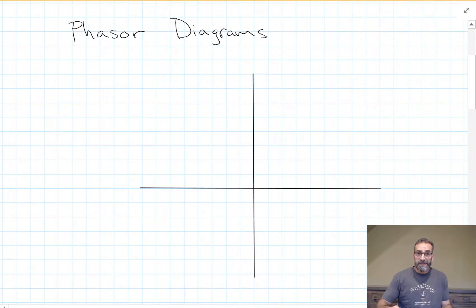What we're doing with this phasor diagram is treating the voltage and the current sort of like vectors. Not quite. We call them phasors. They have a magnitude and a direction associated with them.